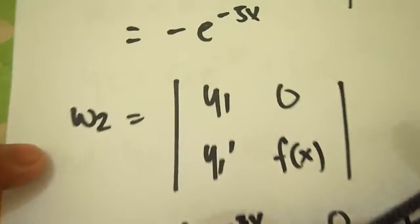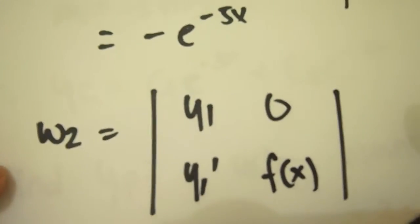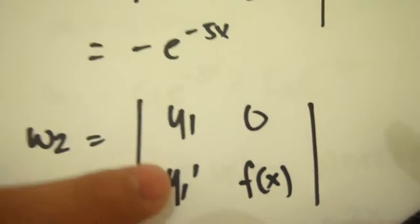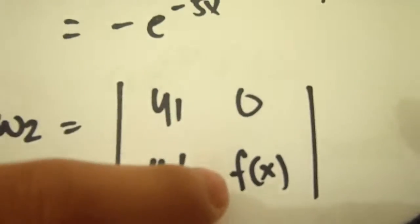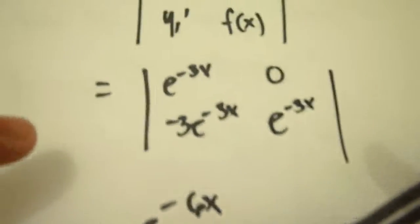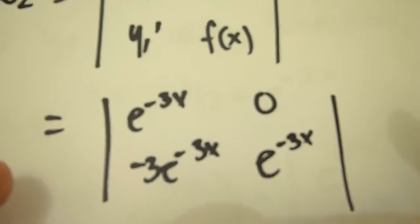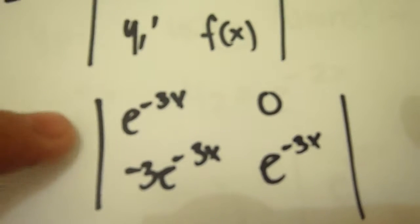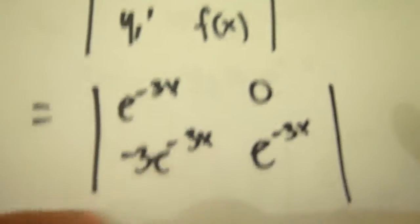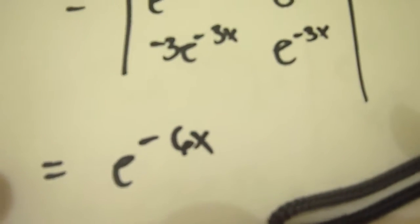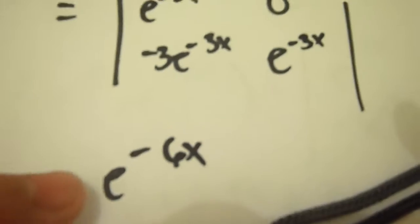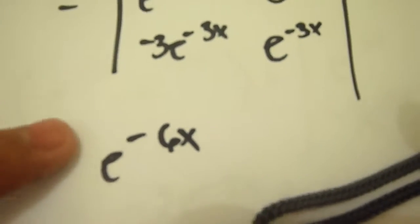For Omega 2, we set up the matrix with entries y1, y1 prime, 0, and f(x). After substituting the values, the answer is e to the negative 6x.